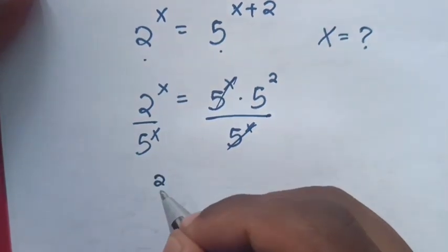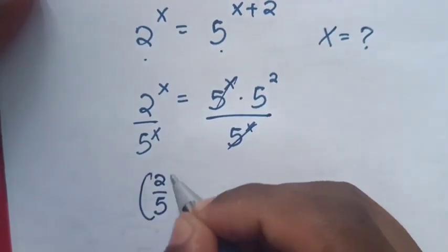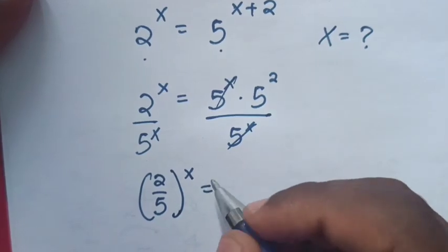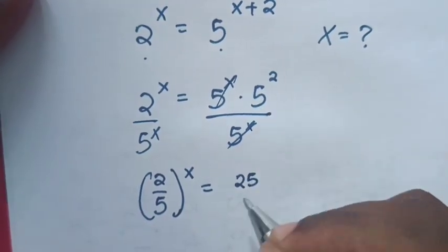Then 2 power x over 5 power x is equal to 2 over 5 power x, which equals 5 squared, which is 25.